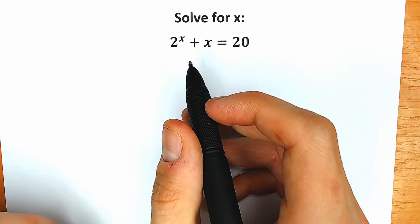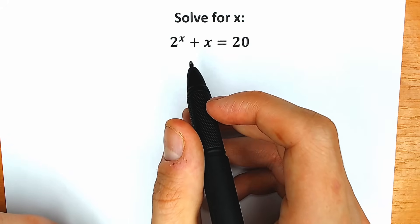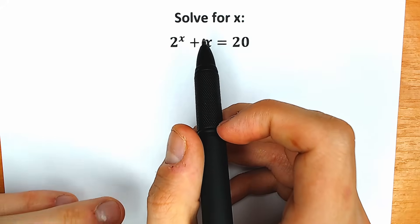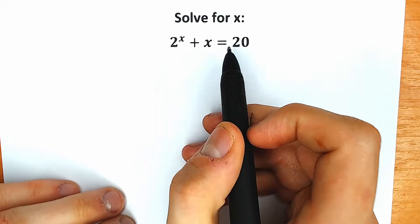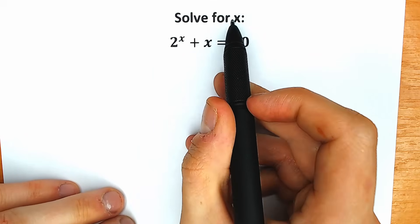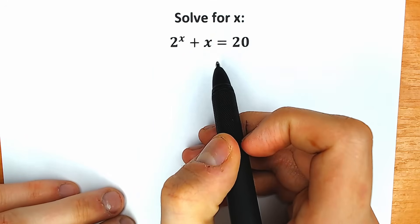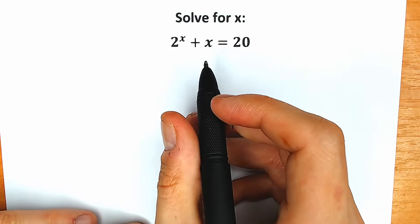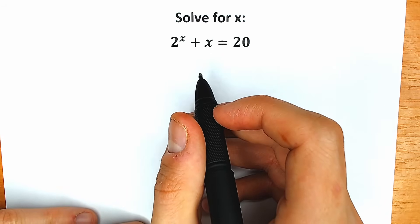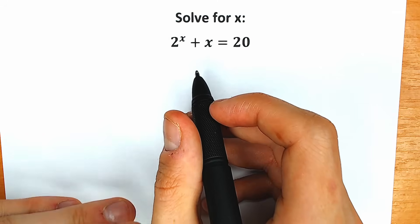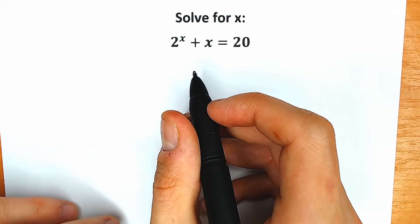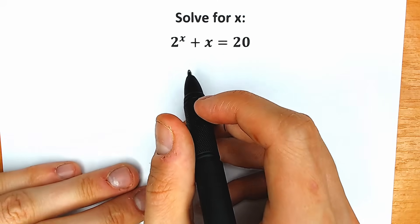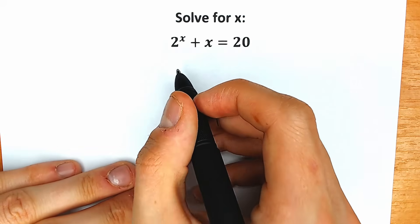Hello everyone, welcome back to my channel Higher Mathematics. Today we have a very interesting question from an entrance examination: 2 to the x plus x equals 20, and we need to find x. If you have your solution, you can write it down in the comment section and in a few minutes we will check your answer. This is a very tricky question and right now I'm going to solve it.